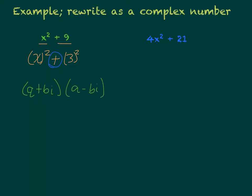So in this case, my a is going to be x, and my b is going to be 3. So my final answer would be x plus 3i times x minus 3i. So now we have factored out that quadratic equation.